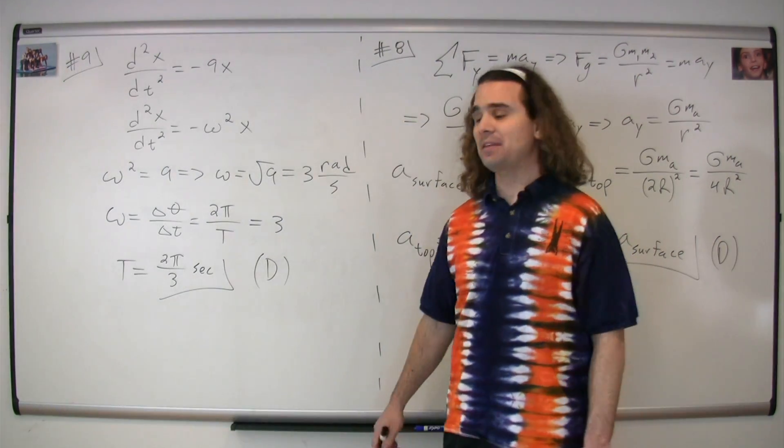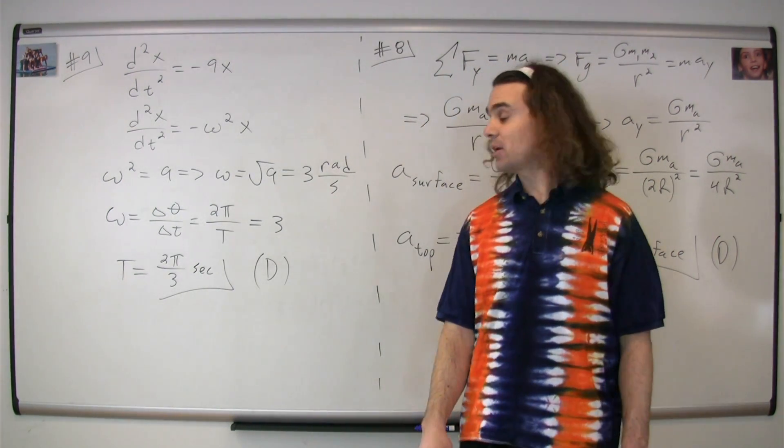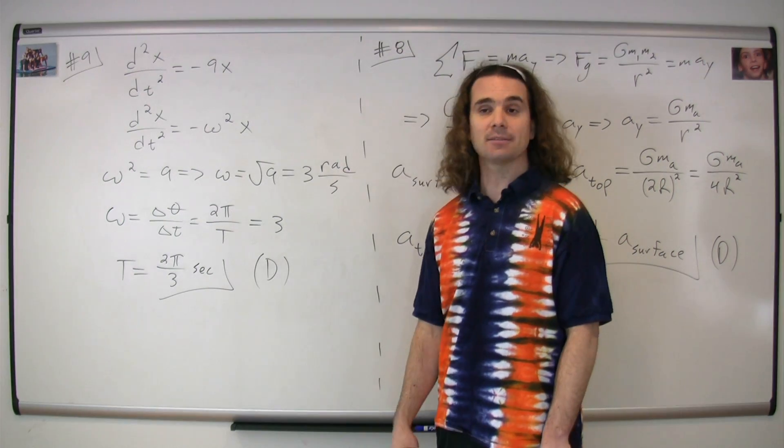We have already figured out the angular frequency. It's equal to three radians per second. Therefore, we can solve for the period. The period ends up being equal to two pi over three seconds. The correct answer is D.